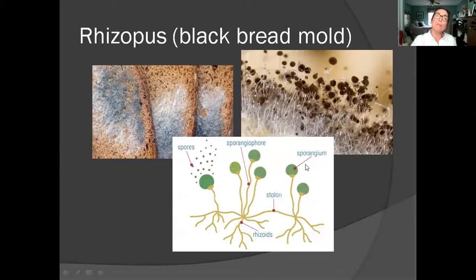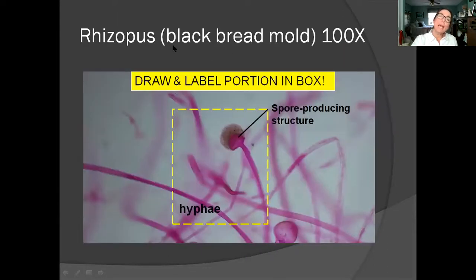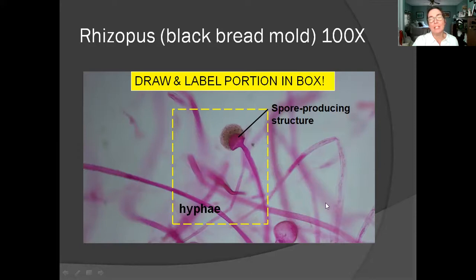Another type of mold with similar spore-producing structures is one we're probably all familiar with: black bread mold. When you open a package and see the black hairy stuff on your bread, it looks hairy because of the hyphae — those fungal fibers — and it feels powdery because of the spores produced on stalks that extend from the hyphae. Under the microscope it looks somewhat similar to Aspergillus, and here's the spore-producing structure. We don't see any mature spores yet released, but we do see those classic stringy fungal cells that make up the body of the mold.